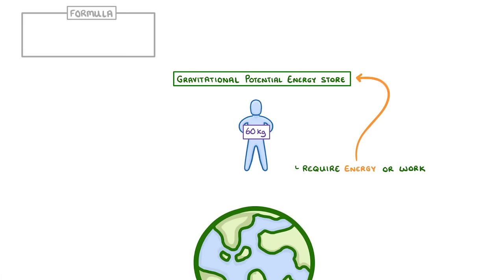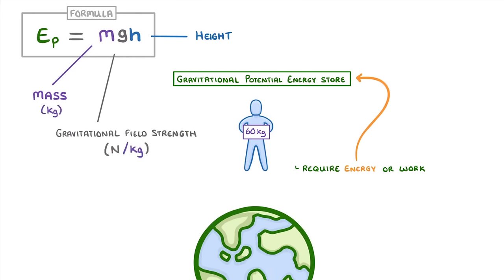The formula for gravitational potential energy, which can be written as Ep, is that Ep equals mgh, or mass times gravitational field strength times height, with the units being kilos, newtons per kilo, and metres. And as gravitational potential energy is a form of energy, it's measured in joules.